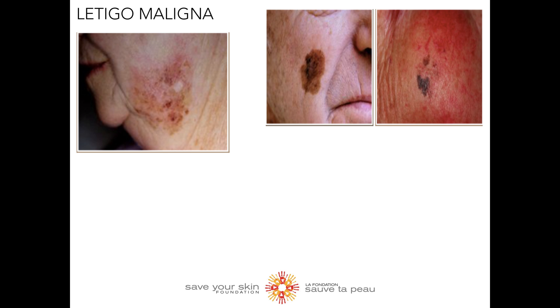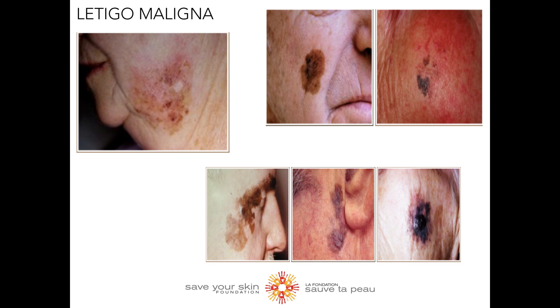Now let's look at lentigo maligna. It's similar to superficial spreading melanoma, as it also arises in the upper surface of the skin, and usually appears as a flat or mildly elevated mottled tan with a dark brown or light brown discoloration. This type of melanoma typically arises in the elderly population on chronically sun-exposed skin — damaged skin on the face, ears, arms, and upper trunk. They usually present with variable pigmentation and irregular shape, and can be flat or mildly elevated. Lentigo maligna is usually large in size and has a smooth surface.